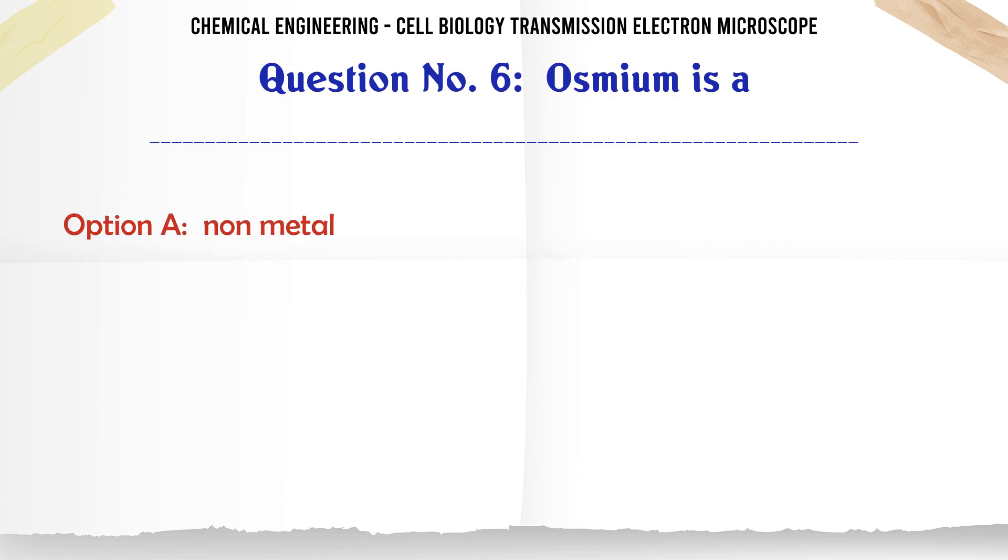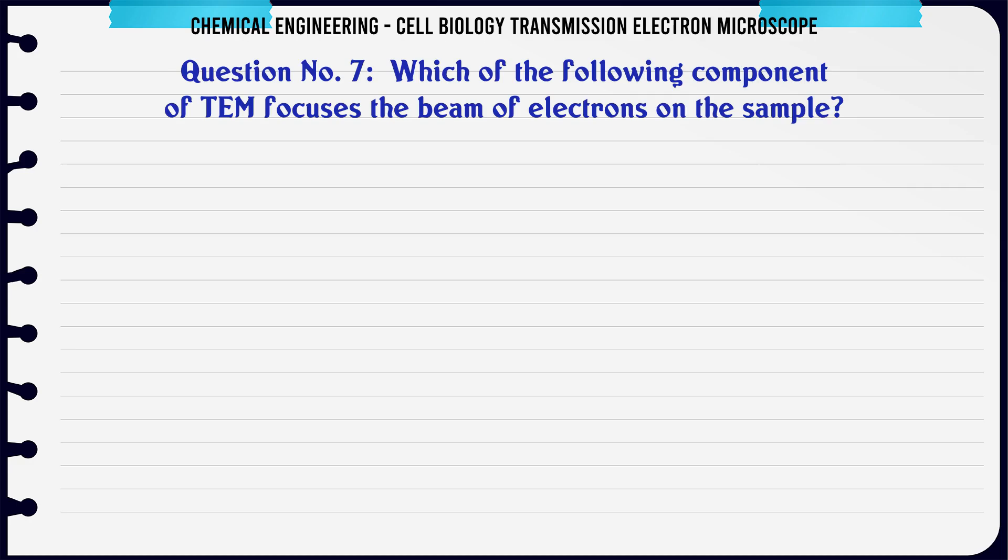Question 6: Osmium is a: A. Non-metal, B. Heavy metal, C. Alloy, D. Light metal. The correct answer is heavy metal.